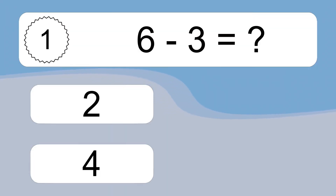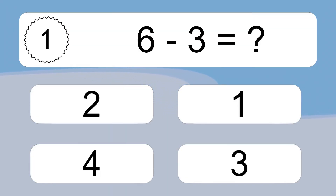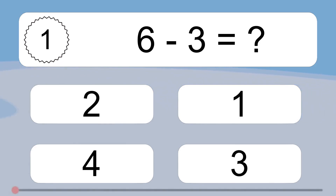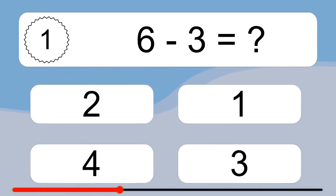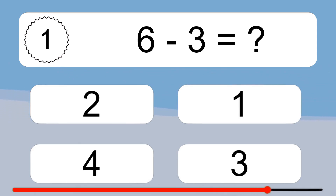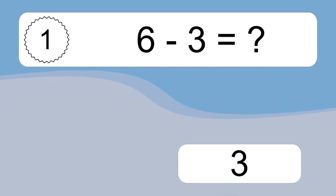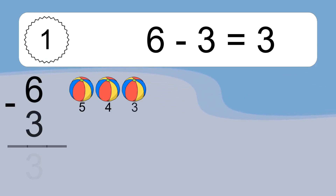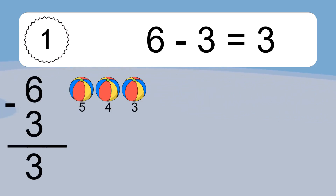6 minus 3 equals what? 6 minus 3 equals 3. Let's count it. 5, 4, 3.